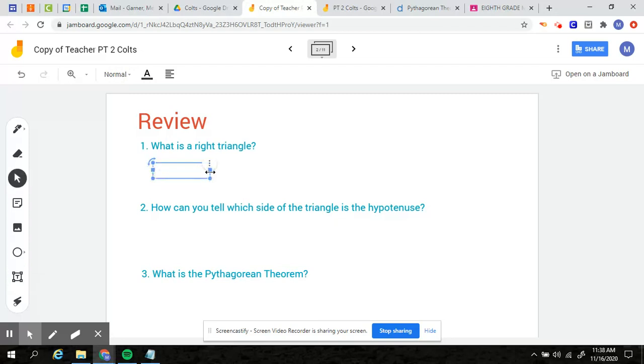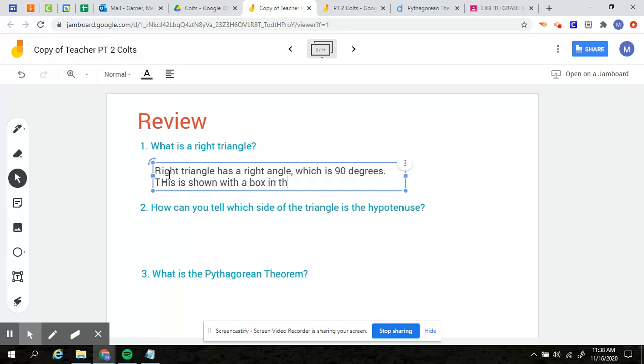What is a right triangle? Remember, Pythagorean Theorem only works with right triangles, and a right triangle has a right angle, which is 90 degrees. So one of your angles in your triangle will be 90 degrees. This is shown with a box in the corner. So if you see a triangle and it has a box in the corner, that means it's 90 degrees. It is a right triangle.